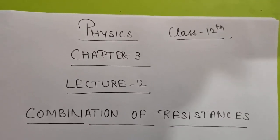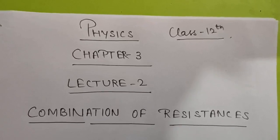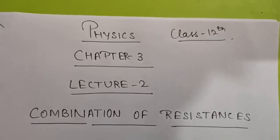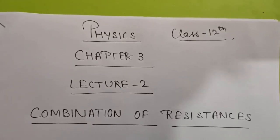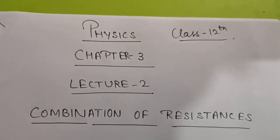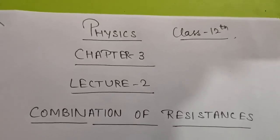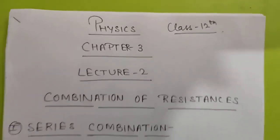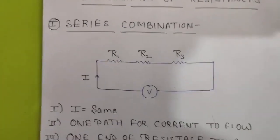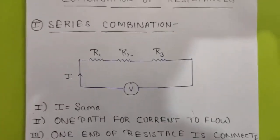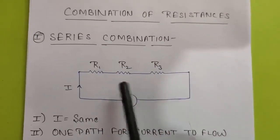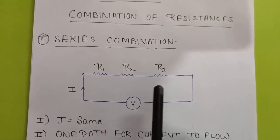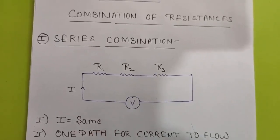By combination, we mean that we'll be connecting two or more resistances together. We'll be discussing two combinations: series combination and parallel combination. First, we'll discuss series combination of resistances. As you can see in this diagram, this diagram is called a series combination of resistances.